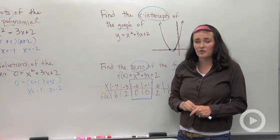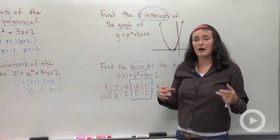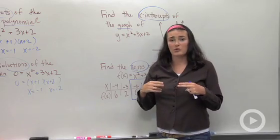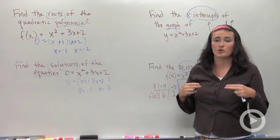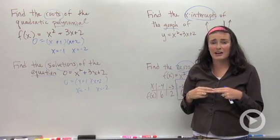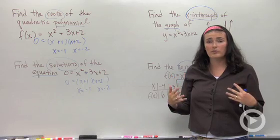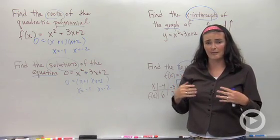One thing I want you guys to start thinking about is how they're alike and how they're different, and also thinking about what vocabulary words go together. Graphs goes with x-intercepts. Roots goes with polynomials. Solutions goes with equations. Those kinds of pairings—if you messed them up, people would still understand what you're talking about, but formally you want to make sure you have the right matchups when you're doing and talking about your math problems.